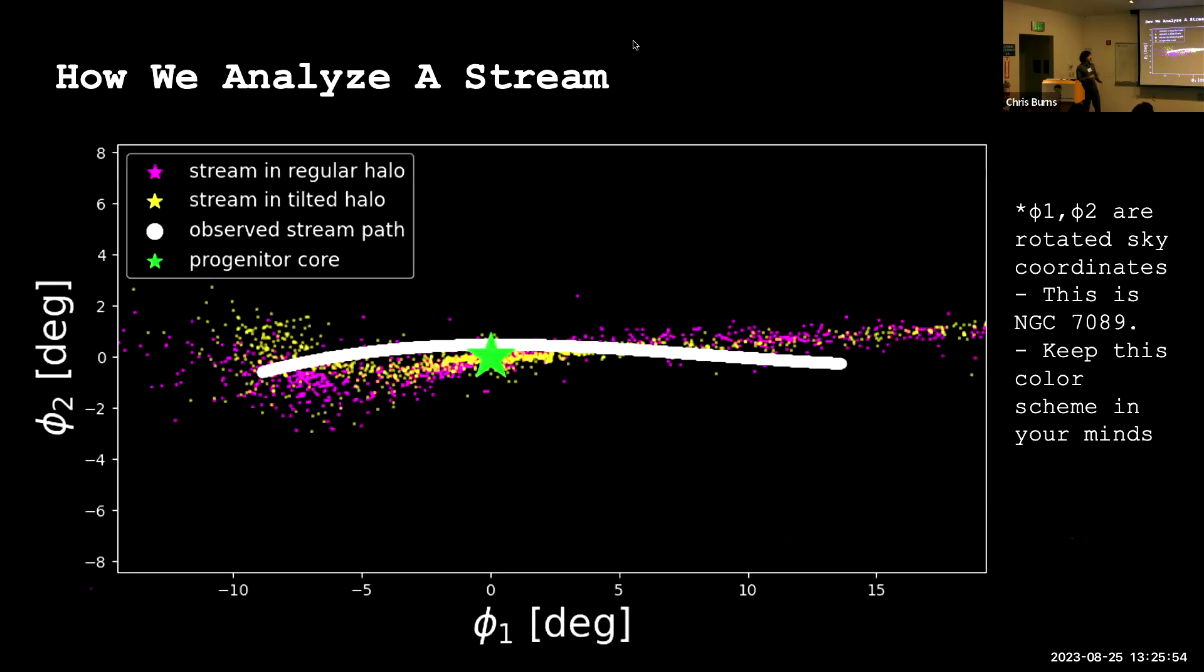So now this brings us to how we actually compare the streams to observation. First, we do a coordinate shift, but don't worry about that—it's still sky coordinates. Here we can see up close what each model gives us versus the observation. Here in yellow, we have the stream in the tilted dark matter distribution. Here in magenta, we have the stream in the ordinary spherically symmetric dark matter distribution. You can see that the tails sort of turn up in different directions. To be quite honest, neither of them compares that well to observation. But can we quantify that?